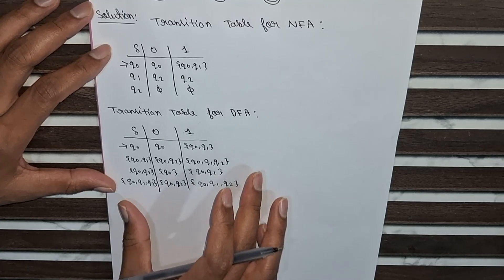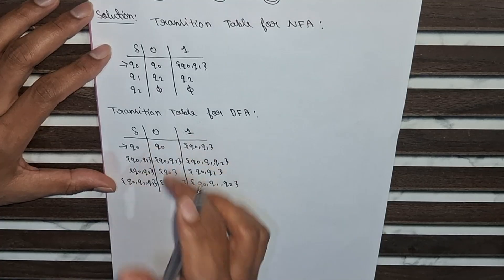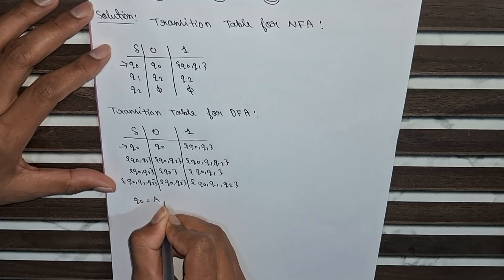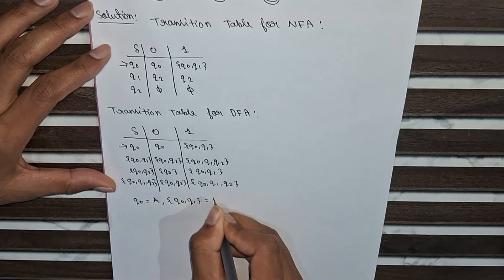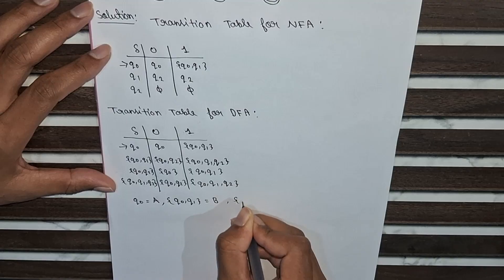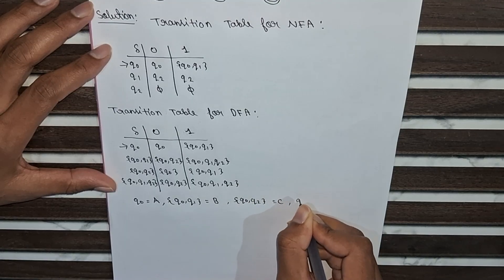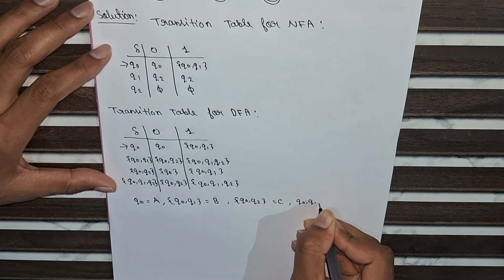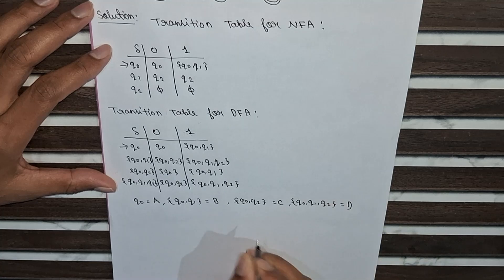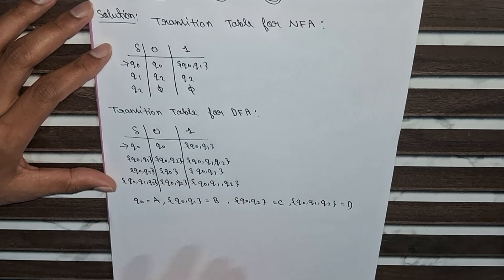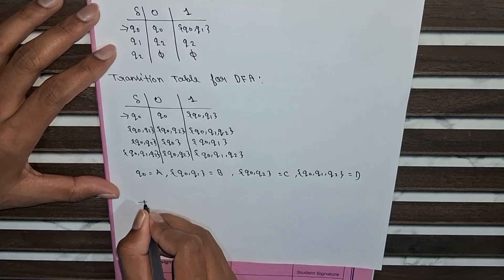This is the final transition table for the DFA. Now we rename the states: q0 equals A, q0,q1 equals B, q0,q2 equals C, and q0,q1,q2 equals D. With the help of this table we will draw the DFA diagram.